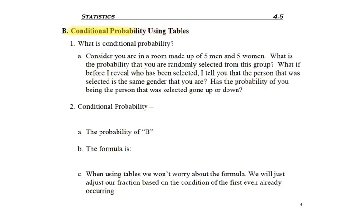We've looked at conditional probability in the sense of picking two items, but this is going to be picking one item from a table. So let's think about this. Consider you're in a room made up of five men and five women. What is the probability that you are randomly selected from this group? That would be one tenth, right? Because you're one of the ten people in this room.